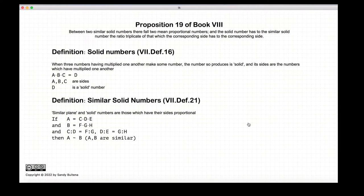Before we begin with the proposition, we have to review some definitions. The first definition is a solid number. A solid number is a number that is a multiple of three other numbers. In this case, we have D equals A times B times C. D is described as a solid number, and A, B, and C are the sides of the solid number.